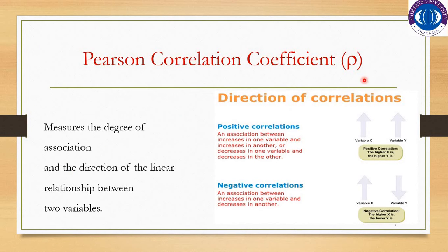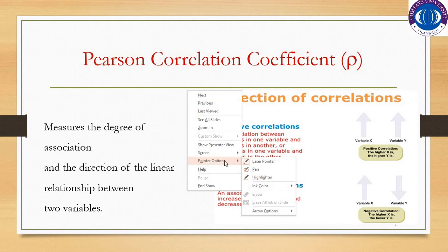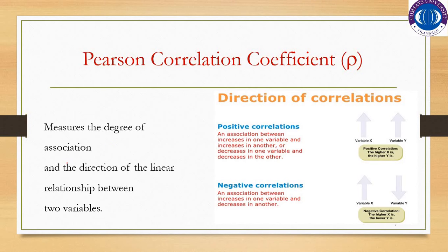The Pearson correlation coefficient is denoted by rho (ρ), which is a population parameter. It measures the degree of association and the direction of the linear relationship between two variables. Since the population parameter is unknown, we use the sample statistic, which is denoted by small r. Just as mu is the population parameter and x-bar is the sample mean, rho is the population parameter and r is the sample statistic we will use throughout the lecture.